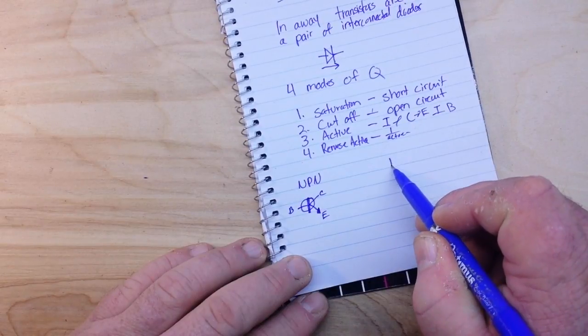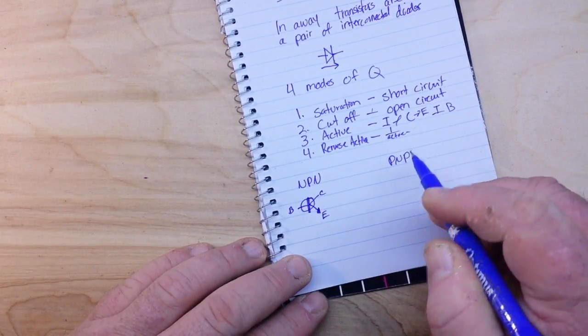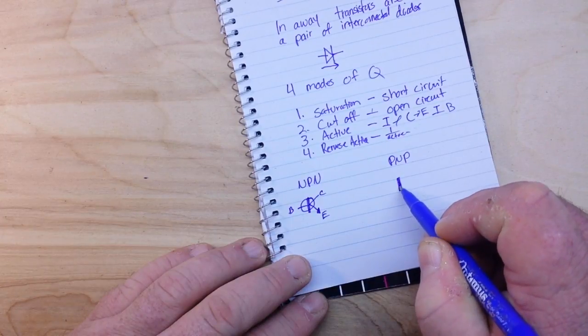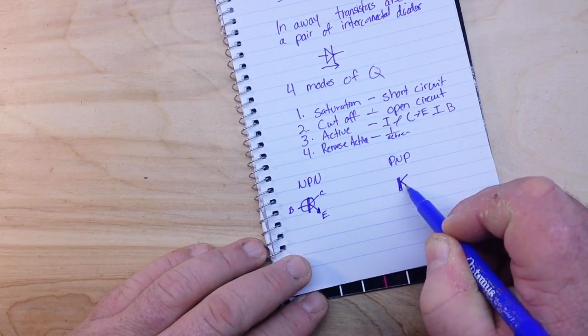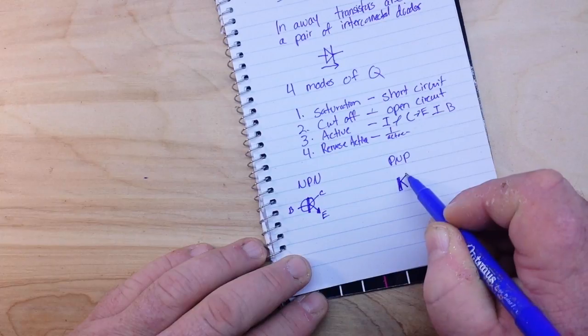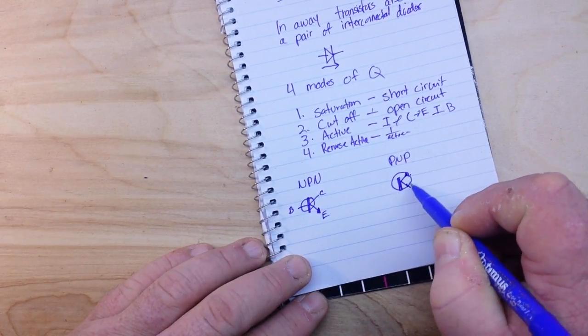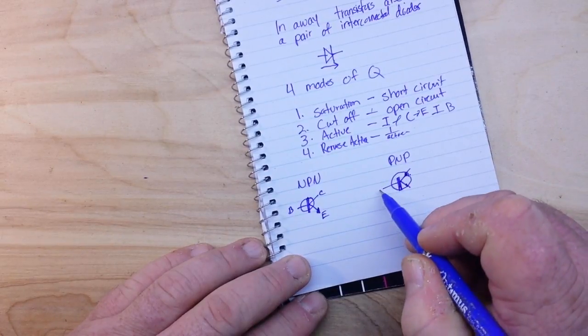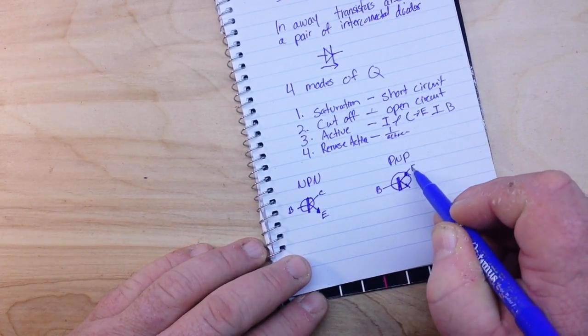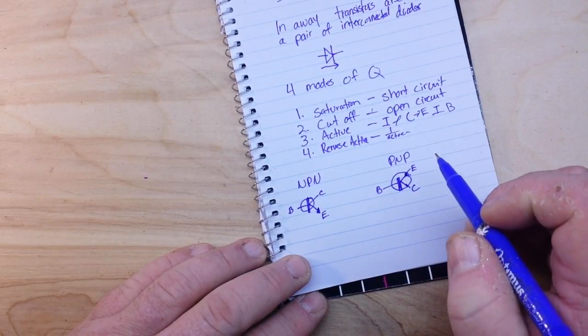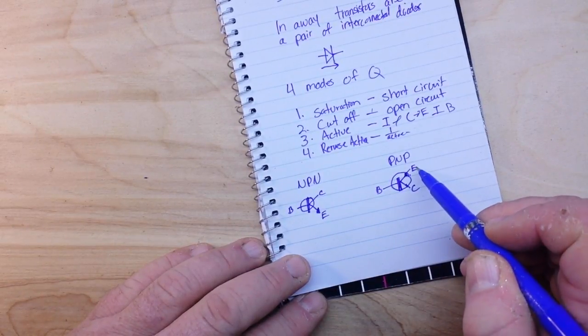Now when we get to PNP transistors, as I said they are very similar. They contain the same basic parts, but they are basically reversed. First the emitter, with the arrow flowing in, and the collector.